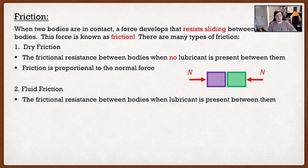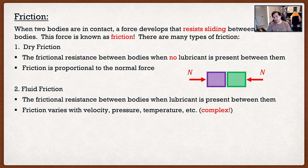The second type is fluid friction — this is the frictional resistance between two bodies when a lubricant is present. What happens is a thin barrier develops between the two surfaces, which allows them to slide much more easily. The problem is friction becomes a function of velocity, pressure, and temperature — basically everything. So the analysis gets quite complex, and we don't consider it much in this course.